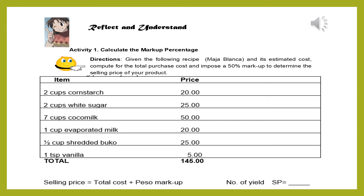That's how short our lesson is for today. Now let us reflect and see if we understood the lesson. We have Activity Number One: calculate the markup percentage. Given the following recipe — for example, mahablanca and its estimated cost — compute for the total purchase cost and impose a 50 percent markup to determine the selling price of your product.